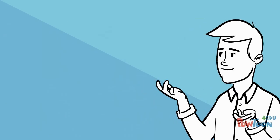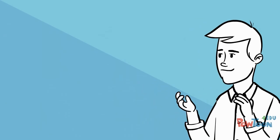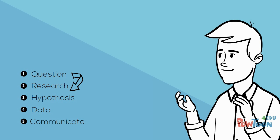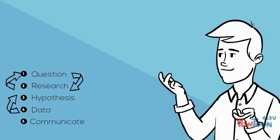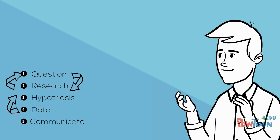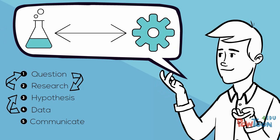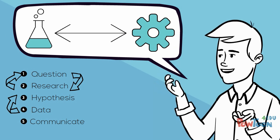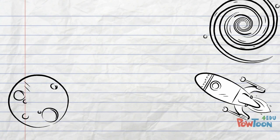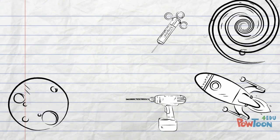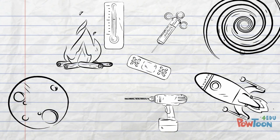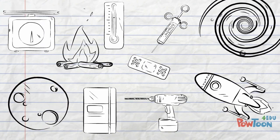While these steps are presented in a sequential order, you will likely return to previous steps multiple times during your project. Your project will probably be in the gray area between science and engineering, and that's okay. Science is not a neat series of steps because real life isn't a neat series of steps. Science and the real world are both messy.